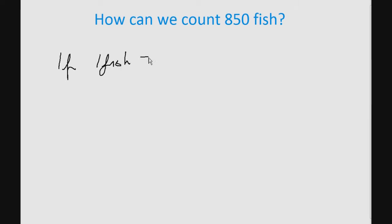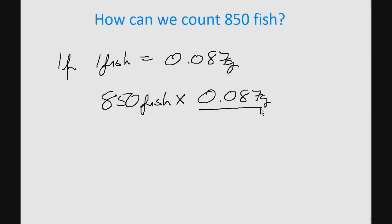If we know that one fish weighs 0.087 grams, how can we count out 850 fish? We can multiply the 850 fish we need by the average weight of one of our fish. 850 multiplied by 0.087 grams. Cancel our units. And we quickly calculate that 850 of our fish weigh 73.9 grams.